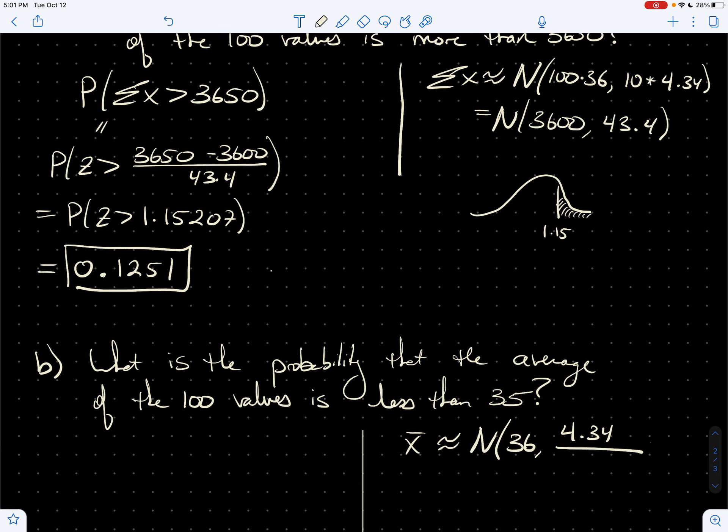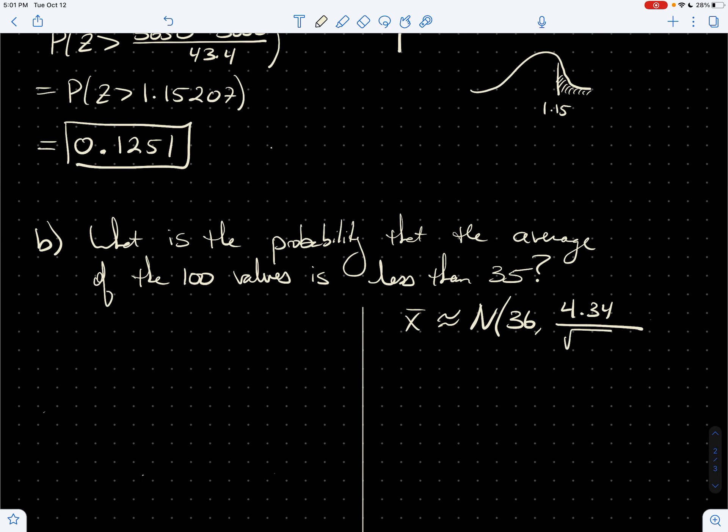And then I want to divide by root n. So root 100, well, that's just 10. So we'll just put a 10 down there. So this is, X is approximately normal with mean 36 and standard deviation 0.434.